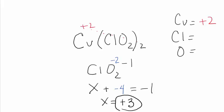And that gives us both our oxidation number for the chlorine and our oxidation number for the oxygen. So our chlorine is positive 3 and our oxygen is minus 2.